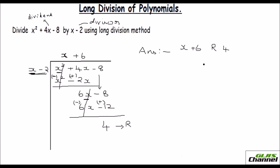Or you can write it this way — as a mixed fraction. The quotient is the whole number part, so you write it like this, and this 4 is the fractional part: 4 divided by x minus 2. That will be your answer.